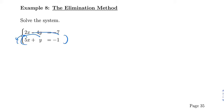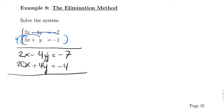So there's going to be 2x minus 4y equals negative 7, and then if we multiply by 4 we'll get 20x plus 4y equals negative 4. So now when we add these, these cancel, and we get 22x equals negative 11.